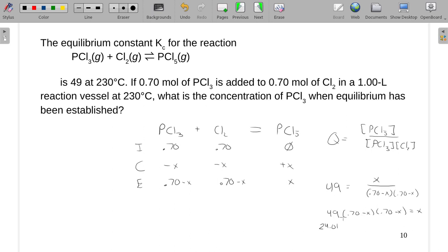Or, actually, you know what? Rather than try to go crazy here, how about we just back up. Instead of doing that, I'm going to foil the 0.7 minus X times 0.7 minus X.